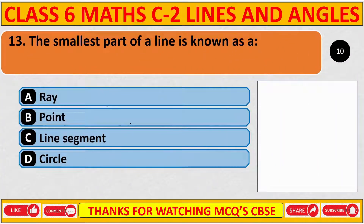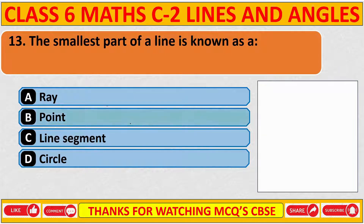The smallest part of a line is known as? The correct answer is B: point.